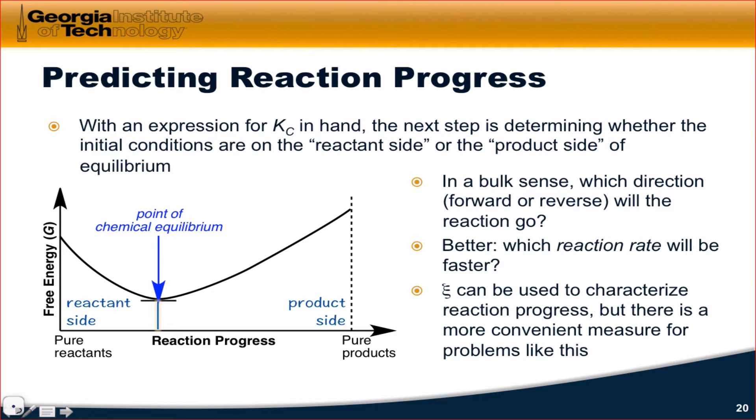We can use Z, the number of reaction events, also known as X in our case, to characterize reaction progress, but there's a more convenient measure for problems like this.